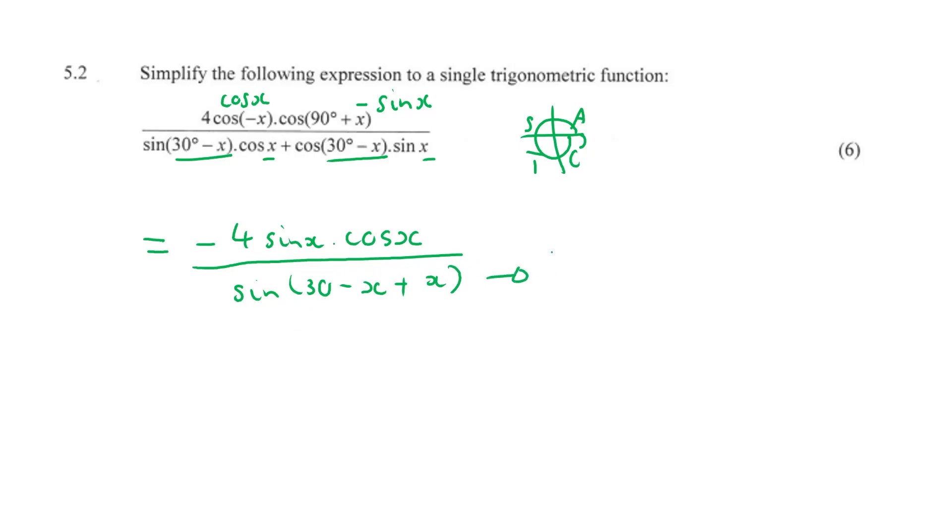And sin(30°), as we know, is actually equal to a half. So if this is equal to a half, anything divided by a half is times 2. So negative 4 times 2 is negative 8 sin(x) cos(x).